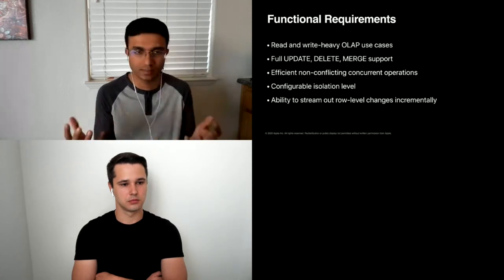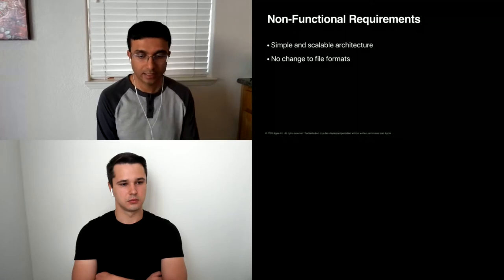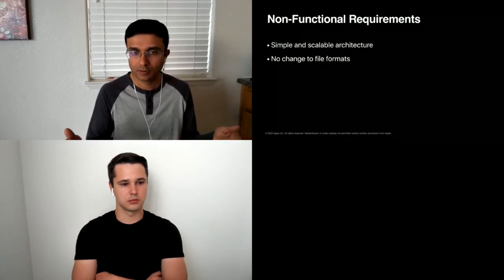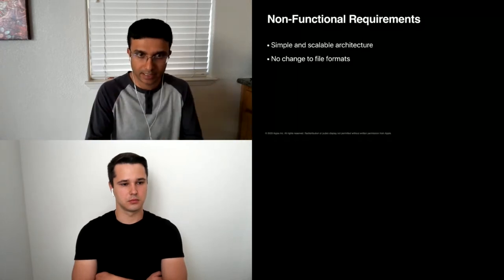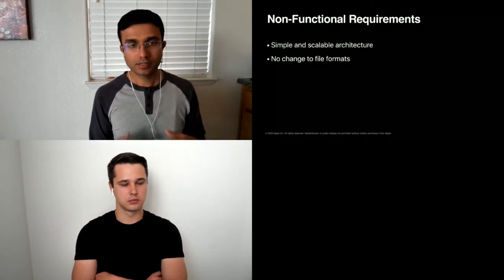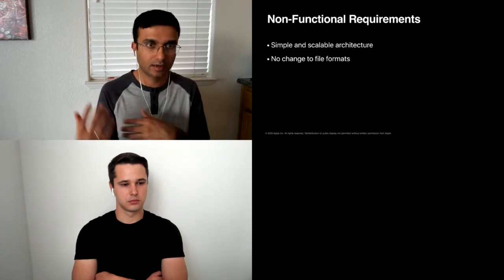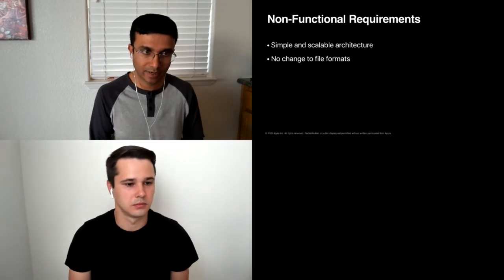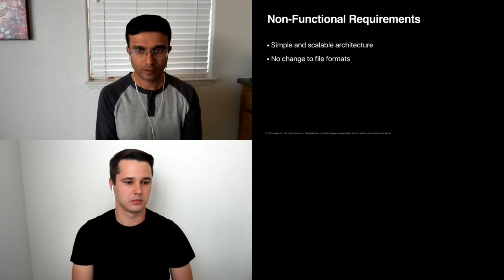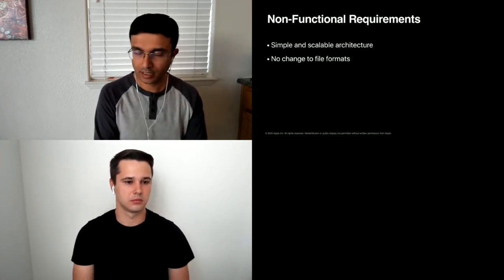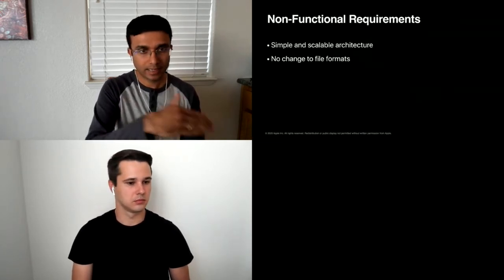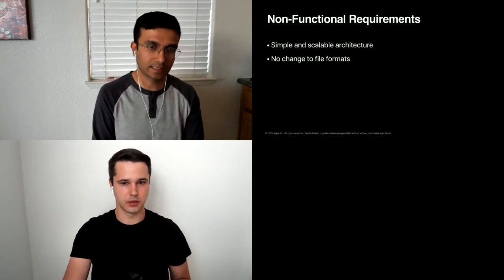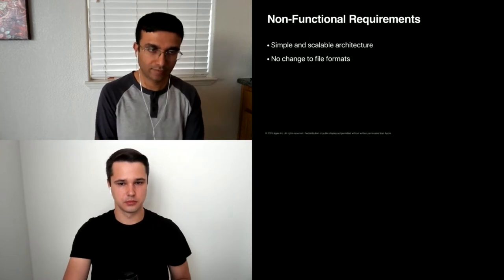On non-functional requirements: one main goal is a simple and scalable architecture. When thinking about ACID compliance and upserts, it's tempting to build a system using log-structured merge trees like Cassandra or HBase — but that comes at a cost: complicated architecture, limited data size (hundreds of terabytes rather than petabytes), and additional processes to manage quorum, caching, etc. Iceberg provides the simple and scalable architecture we need. Another key requirement is no change to file format. Apple already has exabytes of data in our data lakes, and we don't want to replay that entire dataset into a new format. Open data architecture and open file formats — Parquet and Avro — are critical.